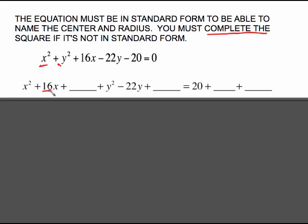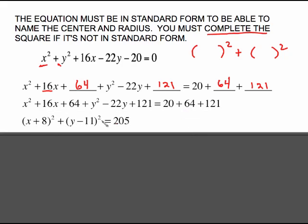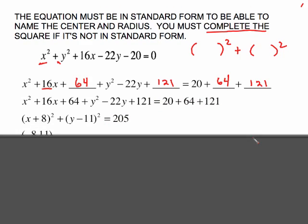Your process for completing the square is pretty simple. Take half of the middle number: half of 16 is 8, squared is 64. Add 64 to both sides. On the y side, half of 22 is 11, 11 squared is 121 — add 121 to both sides. This factors as (x plus 8) squared — because the number that squares to give 64 is 8, and 8 plus 8 is 16 — plus (y plus 11) squared, because 11 squared is 121 and 11 plus 11 is 22. Equals 205.